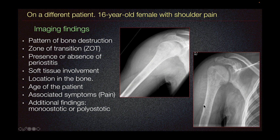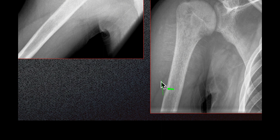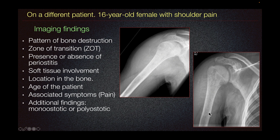The other thing that we look at is the presence or absence of periostitis. For this specific patient, we can see this linear density arising from the cortex — this is a sign of periosteal reaction, specifically the sunburst type of periosteal reaction. More distally, we can see this elevated periosteum, also a sign of periosteal reaction, known as Codman's triangle. Both are signs of an aggressive lesion, depicting aggressive overgrowth where the periosteum could not keep up.